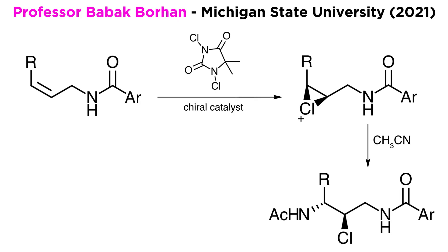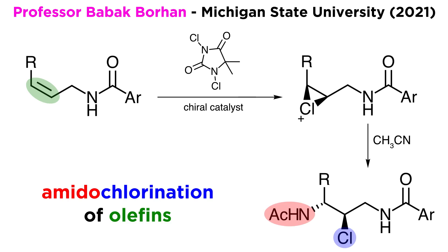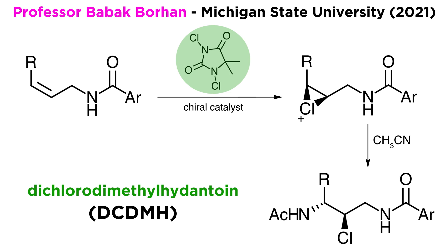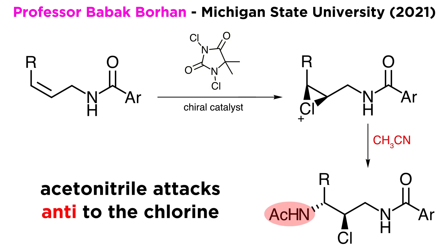We will finish up with a more advanced application, which was just published in 2021 by Professor Babak Borhan at Michigan State University. The goal was the amidochlorination of certain olefins with complete enantio and regio control. The plan is to create a chiral chlorinium ion by the addition of a chlorinium ion source to the olefin from the stereoface dictated by a chiral ligand. This chiral chlorinium ion would then be the source of the carbocation for acetonitrile to attack. The chlorinating agent that worked best was dichlorodimethyl hydantoin, or DCDMH. Attack of the acetonitrile anti to the chlorine atom at the carbon yielding the more stable carbocation would lead to the product.